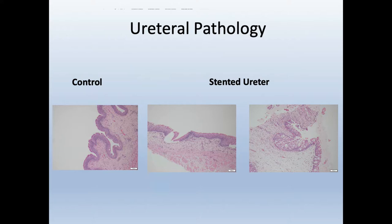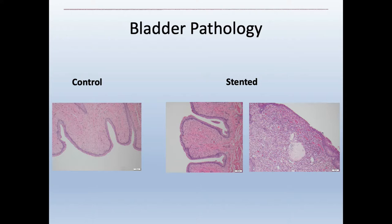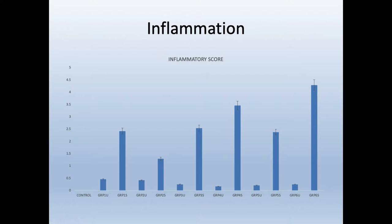Just to show what happens to these ureters on a microscopic level — looking at a control ureter, then with stenting you start to see atrophy, thickening of the wall, vacuolation, and hyperplasia of the epithelium — all of this in a 48-hour group. In the bladder you're seeing some of these differences as well: an inflammatory infiltrate and atrophy at the epithelial area just from having a stent. The quantification shows significant differences.